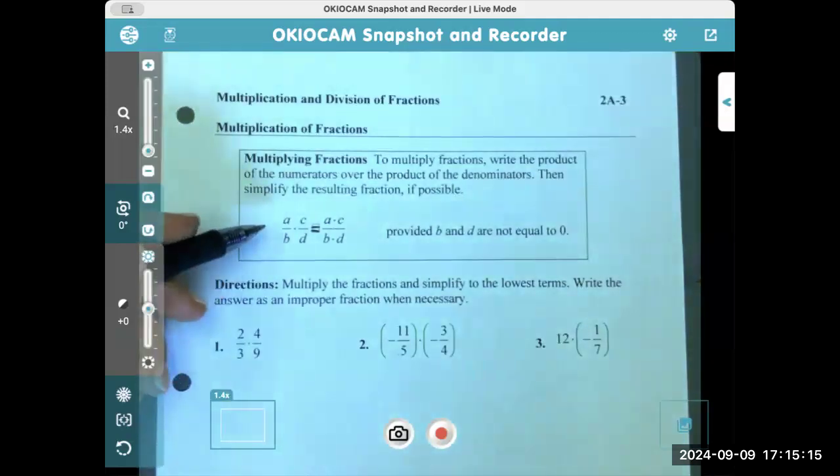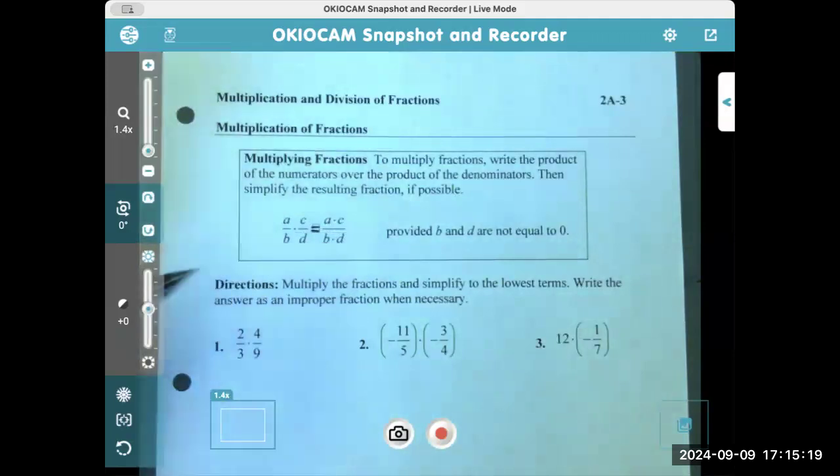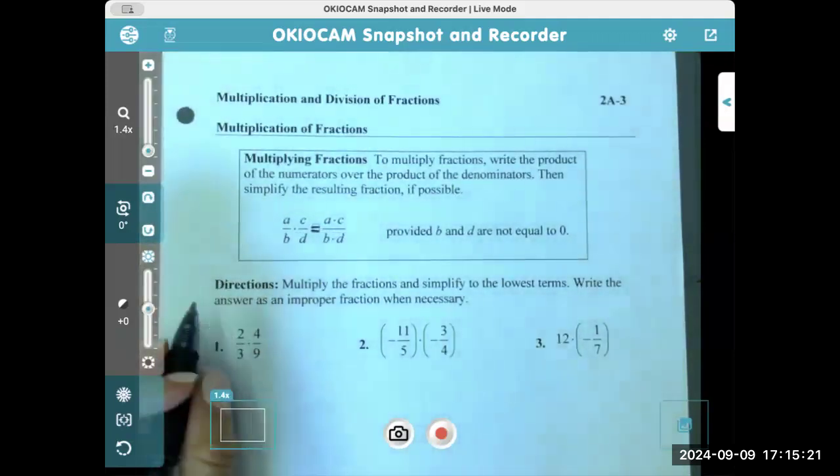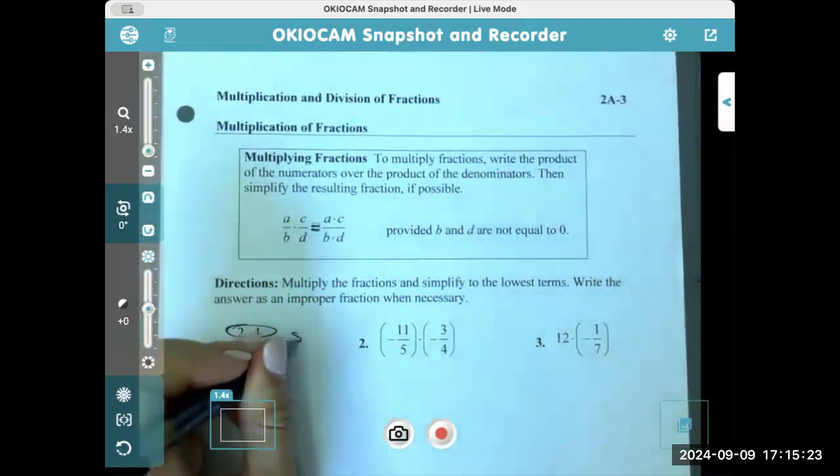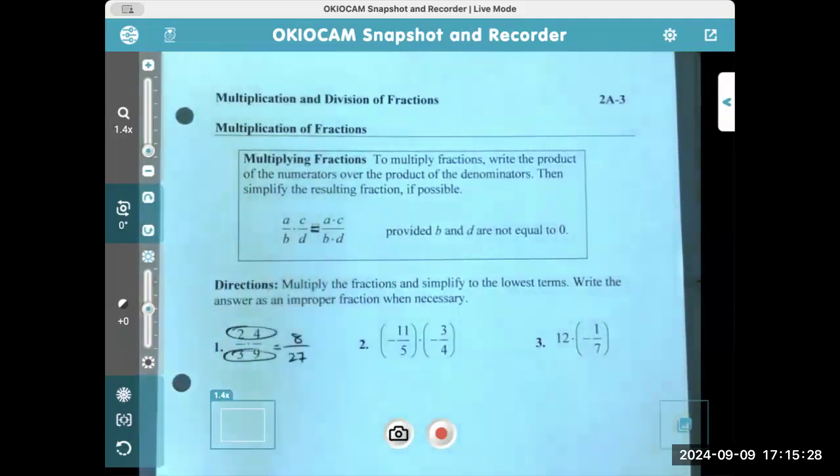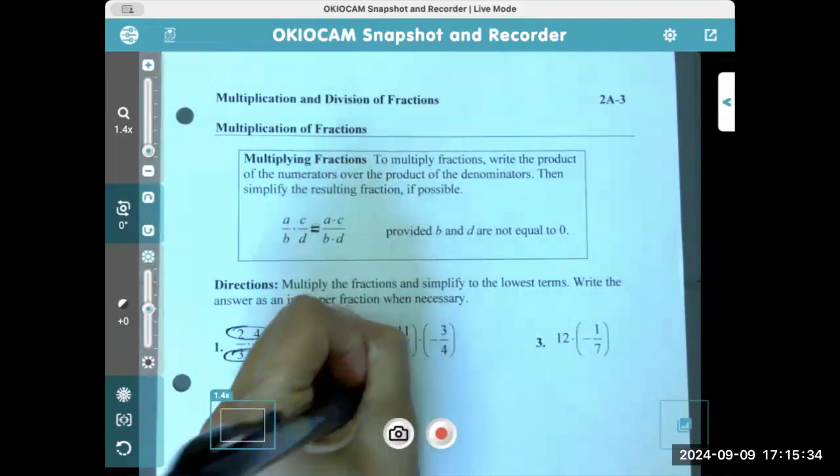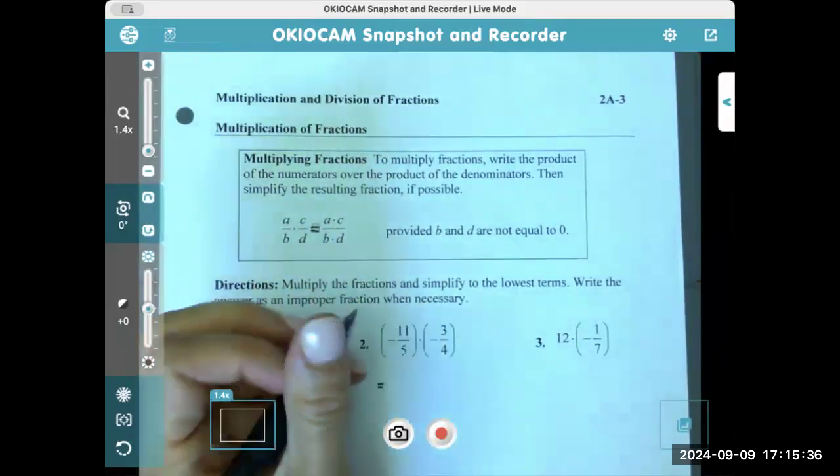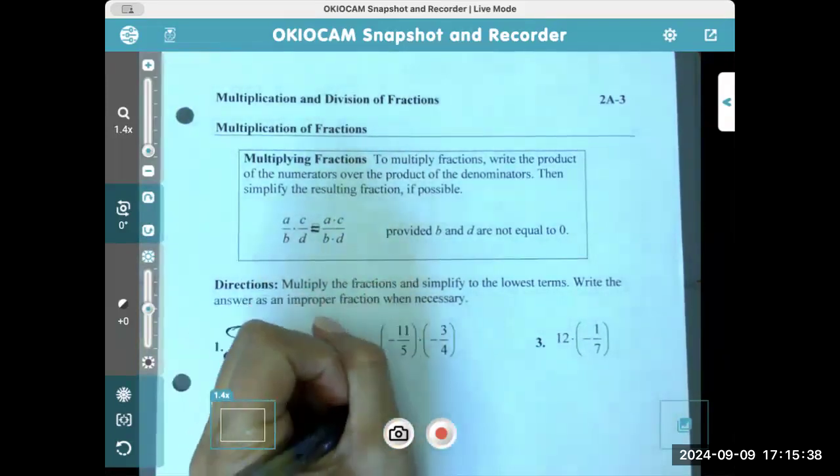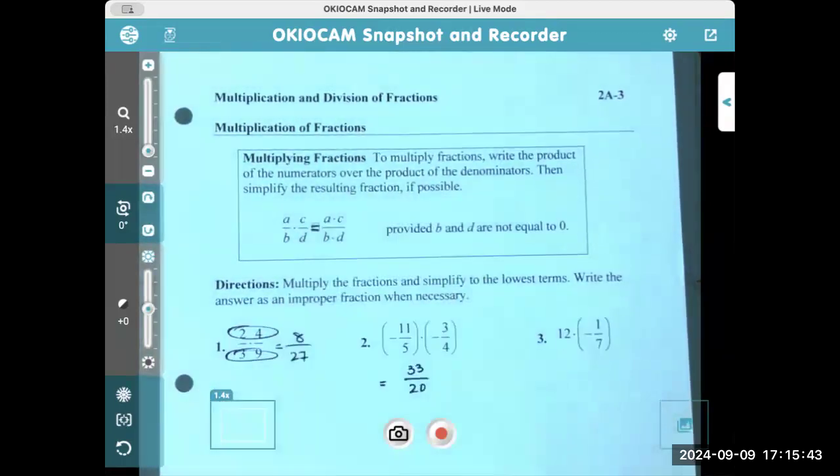What this implies is that you just multiply straight across in the numerator and straight across in the denominator. So you just have two times four, which is eight, and three times nine, which is 27. And that's it. Here, notice that you have a negative times a negative, which gives us a positive. So we have a positive 33 over 20.